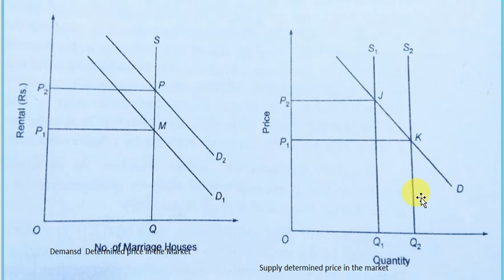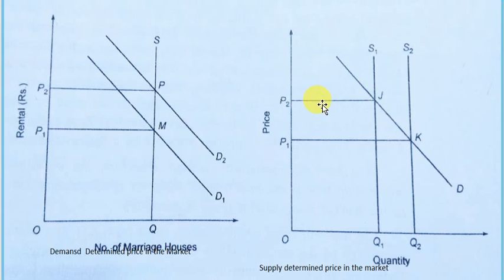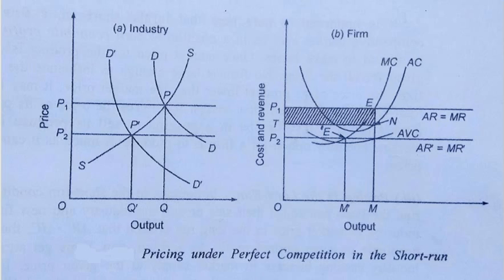Examples of supply-determined prices include the fish market, the stock market, and the milk market. In these markets, when supply decreases there is a natural increase in the price of the product in the short period.